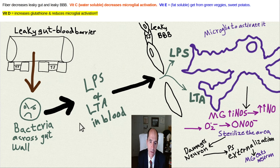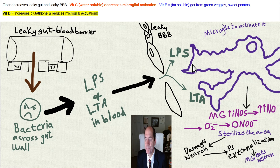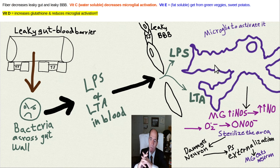Having leaky gut leads to bacterial endotoxins in the blood: LPS (lipopolysaccharide from gram-negative bacteria) and LTA (lipoteichoic acid from gram-positive bacteria). Those can cross a leaky blood-brain barrier and activate your microglia cells. When microglia are activated, they start secreting things that can be really toxic and dangerous.